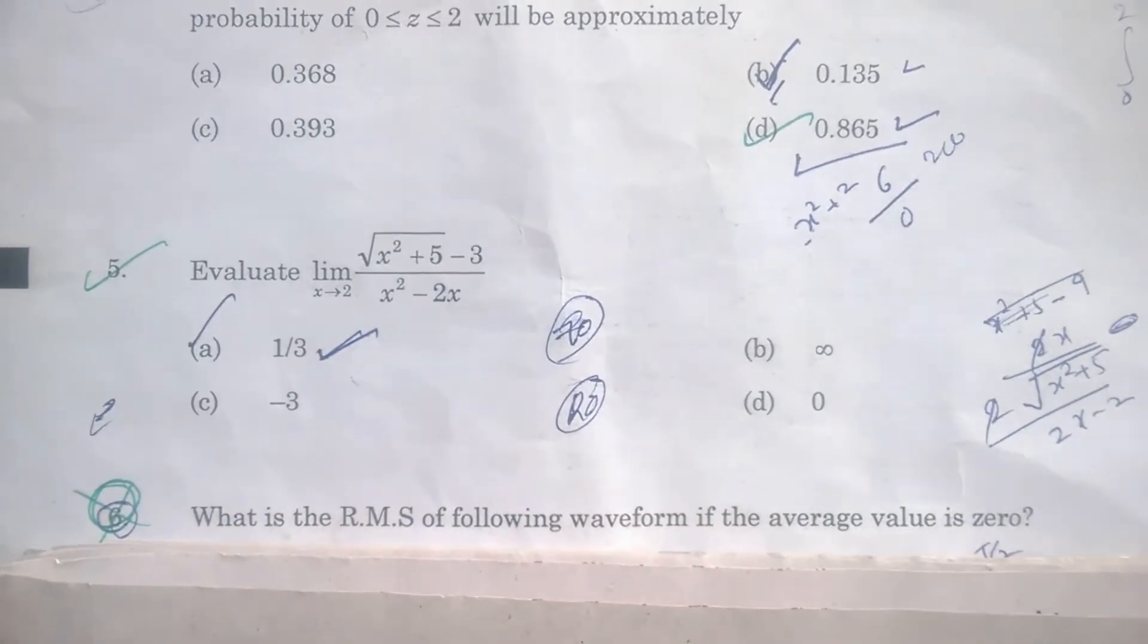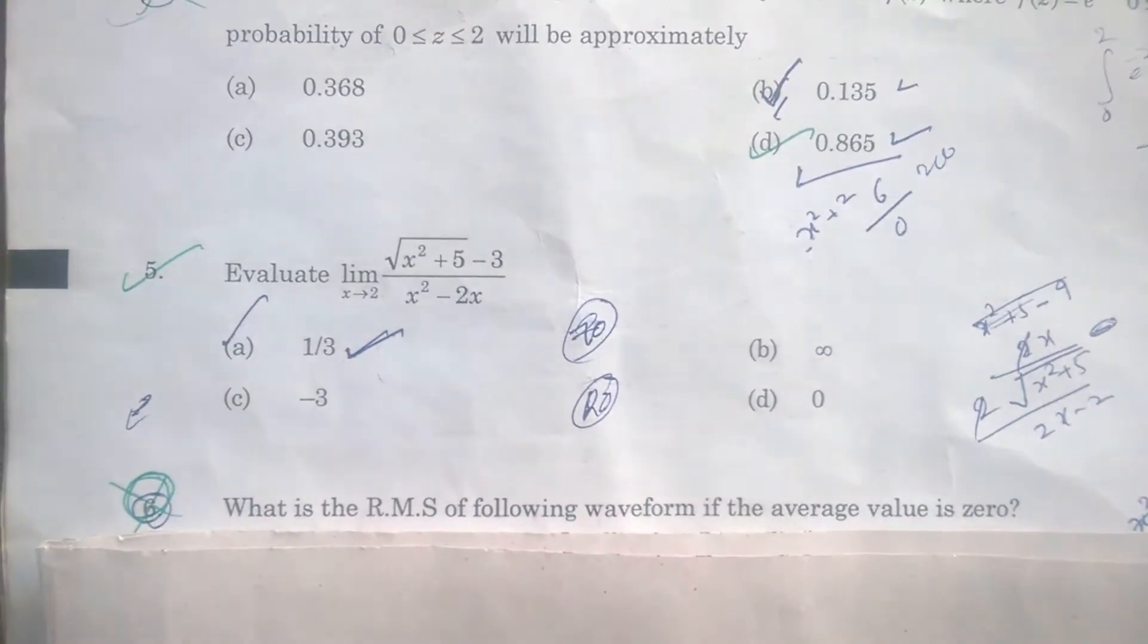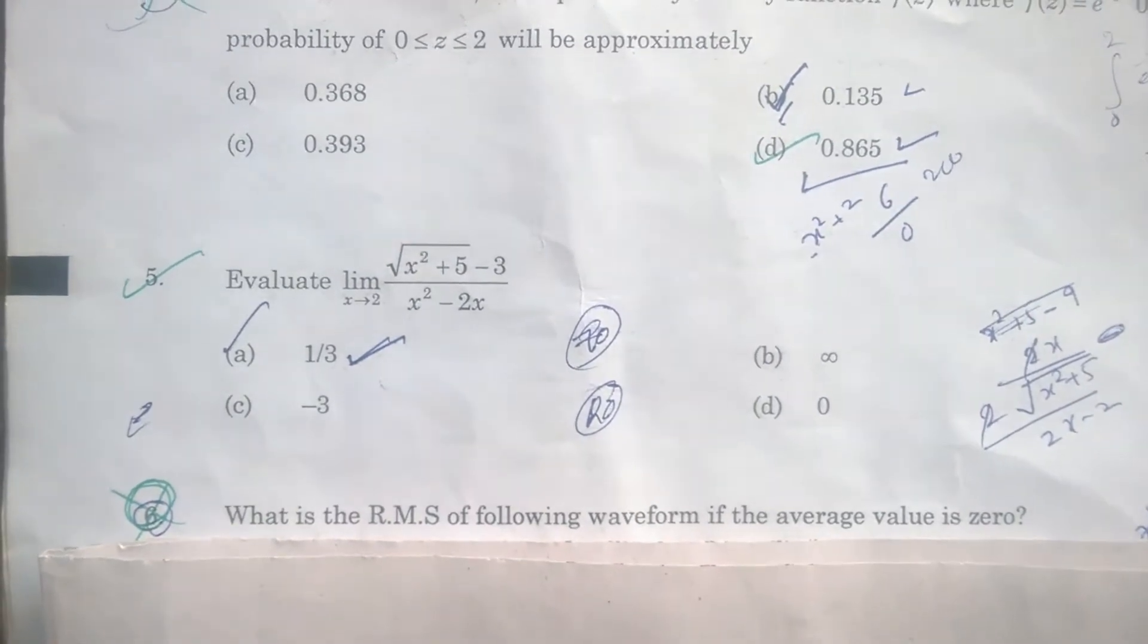The options are: (a) 1/3, (b) infinity, (c) -3, and (d) 0.